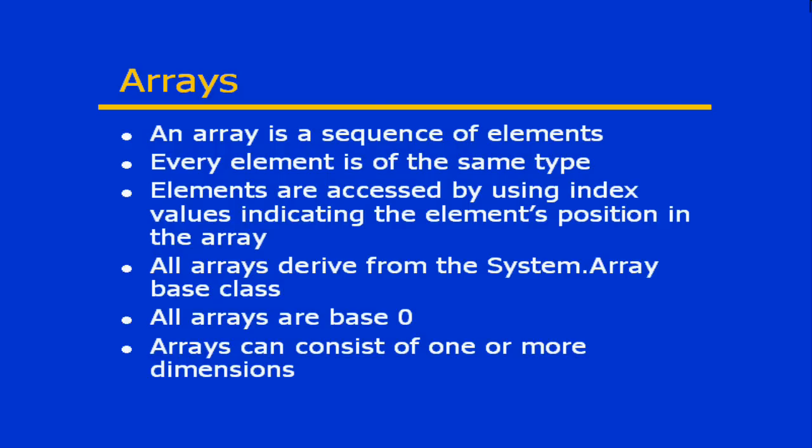One important thing about the array structure is that every single element is always going to be of the same basic data type. So if I wanted to create an array of integers, for example, every single element in that array would have to be typed as an integer. I can also create arrays of other types, including class types, interface types, etc.